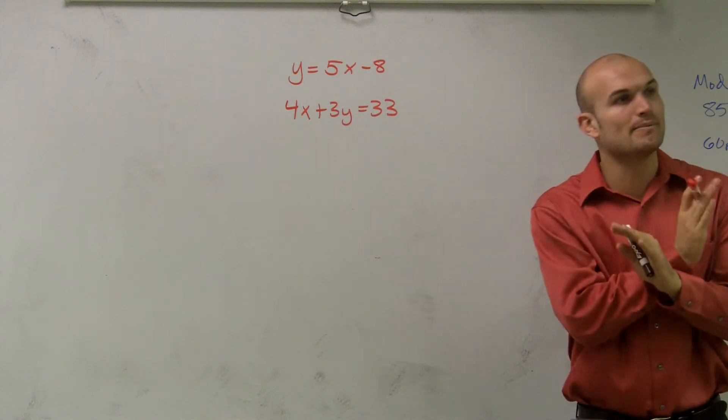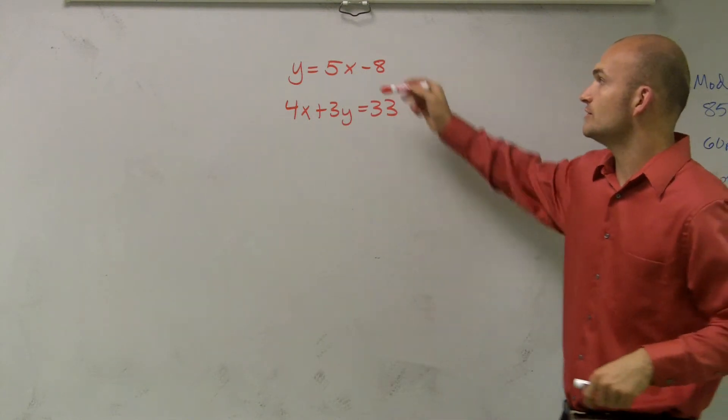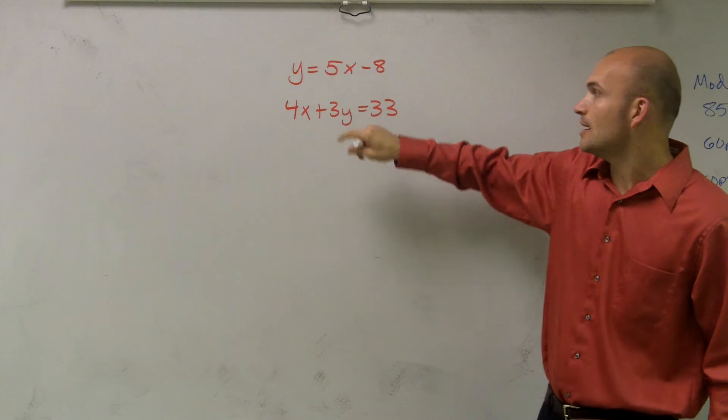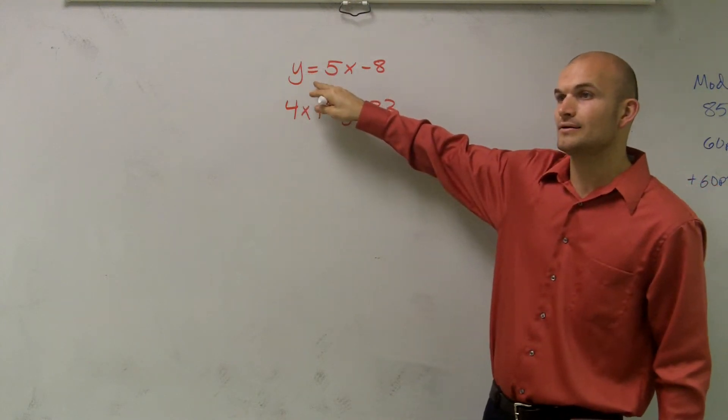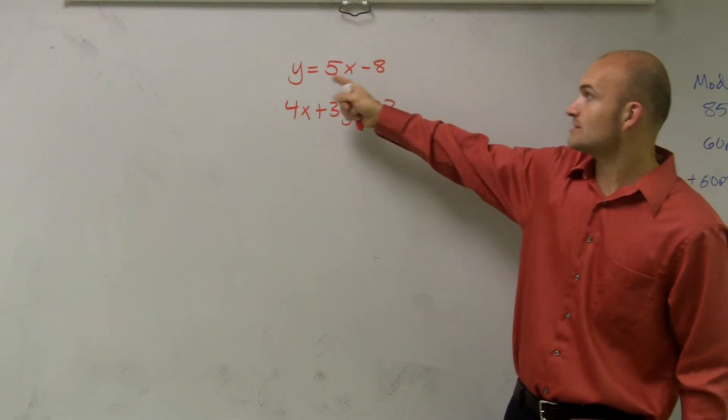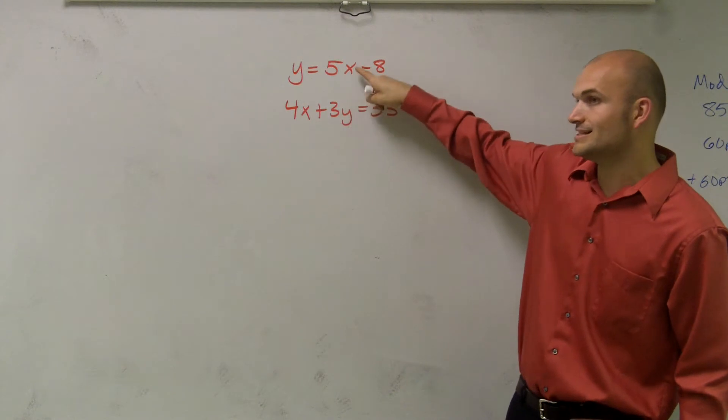So if you guys remember, when we were graphing our two lines, their intersection was when the y and the x were equal to each other. So these two equations, these y and x's are equal to each other. But you can say that this y is equal to 5x minus 8. So therefore, since this is equal to this, I could say this is equal to that.